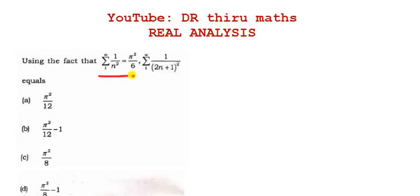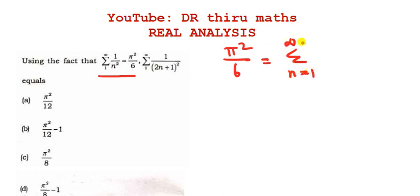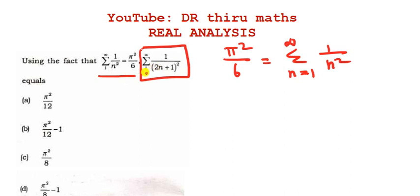Using the given fact that pi squared divided by 6 equals summation n equal to 1 to infinity of 1 by n square, we need to find the value of summation n equal to 1 to infinity of 1 divided by (2n plus 1) whole square.